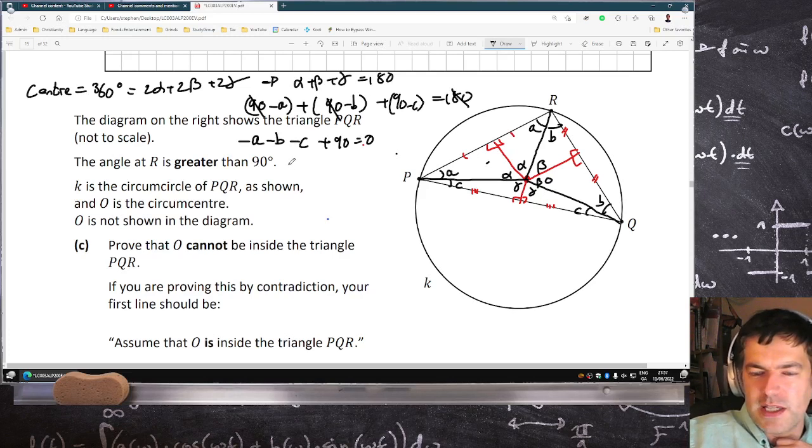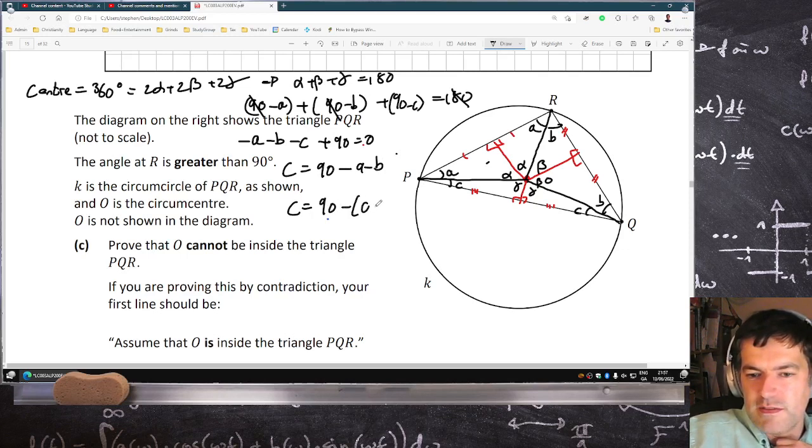So that means then that C has to equal 90 minus A minus B, which means C has to equal 90 minus A plus B.